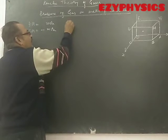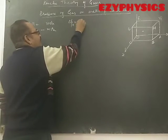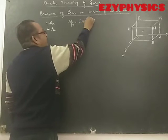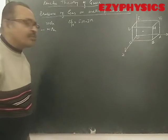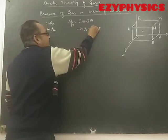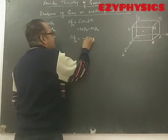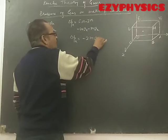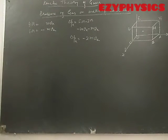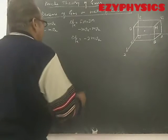Now, the change in momentum along the x-axis: ΔPx equals final momentum minus initial momentum. Final momentum is minus MVx and initial momentum is plus MVx, so the change in momentum ΔPx is equal to 2MVx in magnitude.